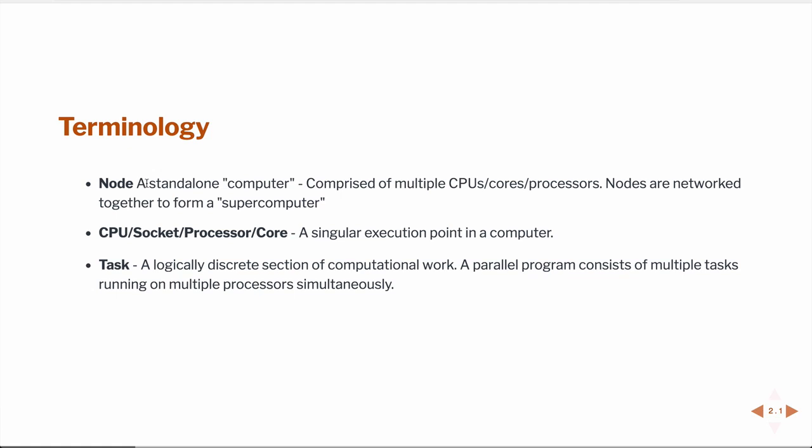They don't look like a desktop computer, but they have all the essential features that a desktop computer would have. The next thing is, these are all sort of synonyms: CPU, central processing unit, socket, processor, core. Technically there's a difference — you could have multiple cores per socket — but for the purposes of this class, it's fine to use them as synonyms. This is the singular sort of execution point in a computer.